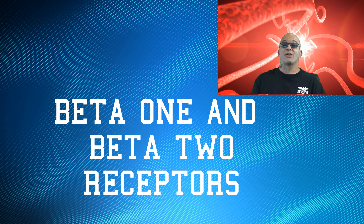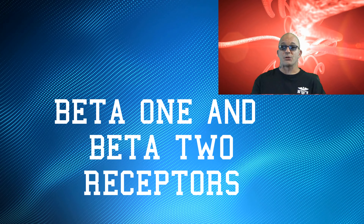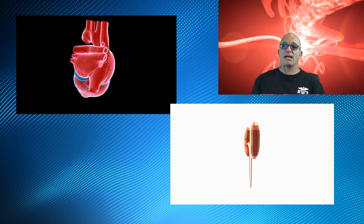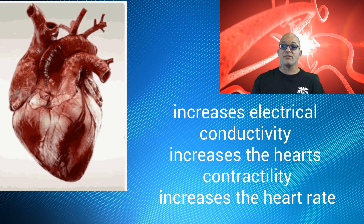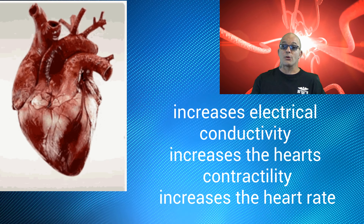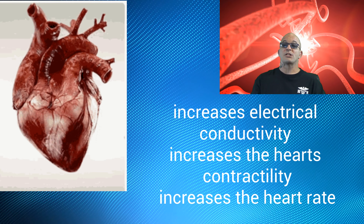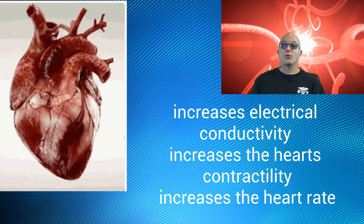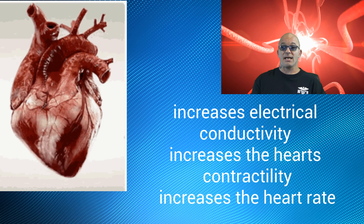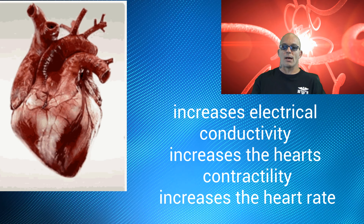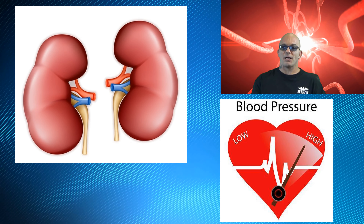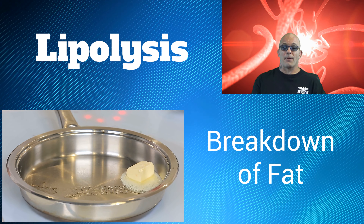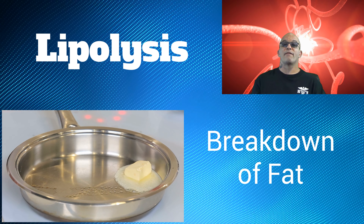We shall now discuss beta-1 and beta-2 receptors. Beta-1 receptors are located in the heart and kidneys. When activated in the heart, they increase electrical conductivity, which in turn increases the heart's contractility and increases the heart rate. In the kidneys, they increase renin release, which increases the blood pressure. Beta-1 receptors also stimulate lipolysis, which is the metabolism of fat.